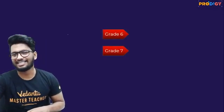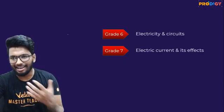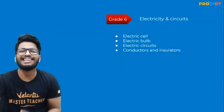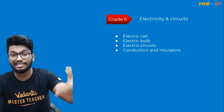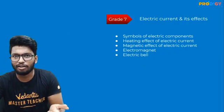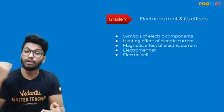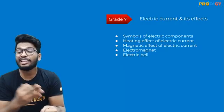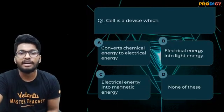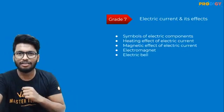In your sixth grade you studied something called 'Electricity and Circuits' where you learned about electric cells, electric bulbs, electric circuits, conductors, and insulators. In your seventh grade you studied electric current and its effects — symbols of electric components, the heating effect of electric current, the magnetic effect of electric current, how electromagnets work, and how an electric bell works. Based on these concepts, I'm going to ask you a series of questions. Be honest — let's get started!